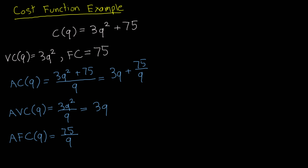The last cost function we need is the marginal cost, which is the derivative of the cost function. Applying the power rule to 3Q² + 75, we bring down the 2 and get 6Q. The fixed cost drops out. So the marginal cost is equal to 6Q.